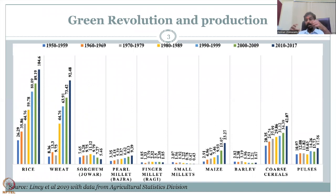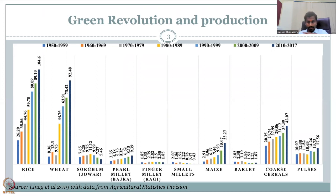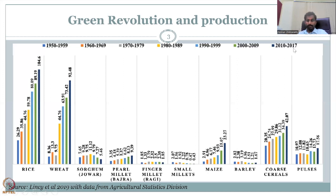Rice production in the 1950s was 26.29 million tonnes, but it increased almost four times by 2010–2017. This is highly unsustainable growth in such a short 60 years, because rice and wheat require a lot of water and soil fertility. Unlike other crops, they don't put back soil fertility.